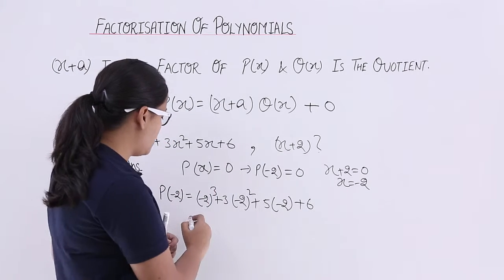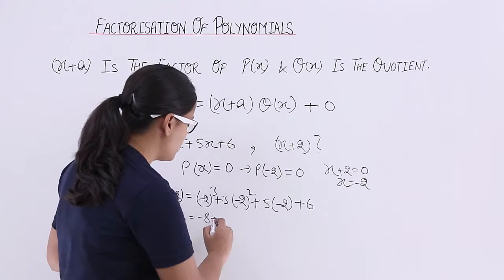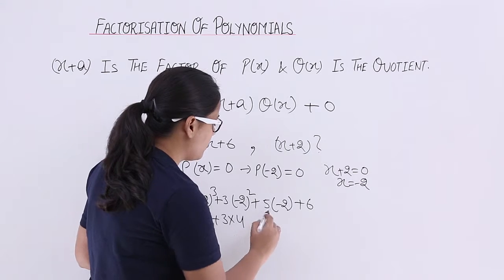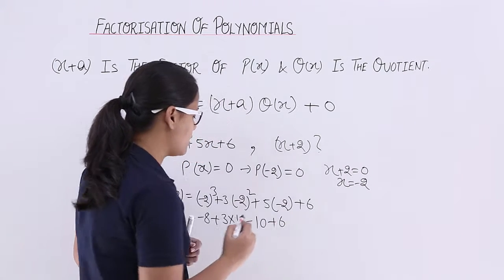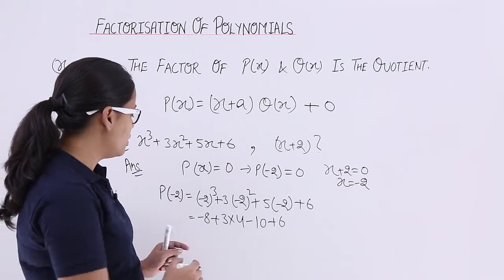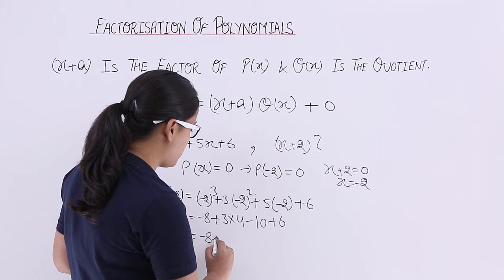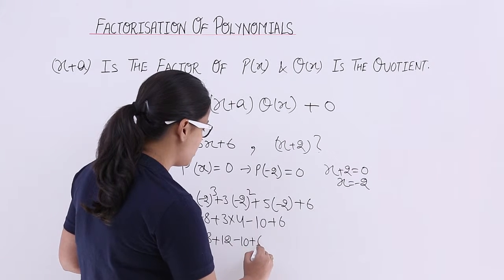Now let's start calculating it: -8 + 3 × 4 - 10 + 6. Start evaluating it further: -8 + 12 - 10 + 6.